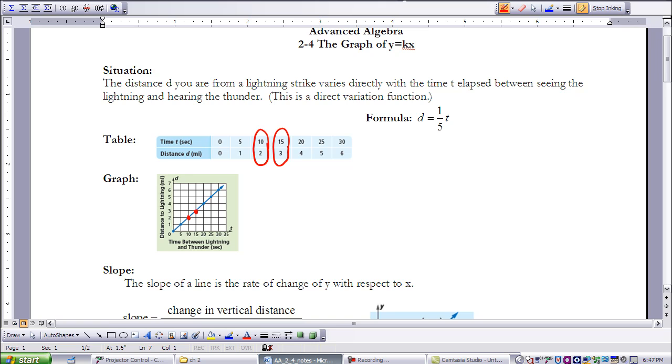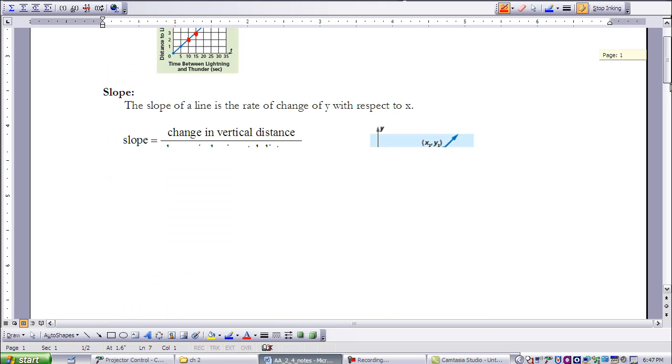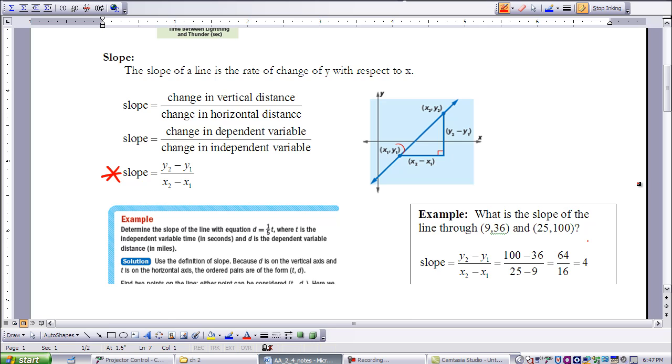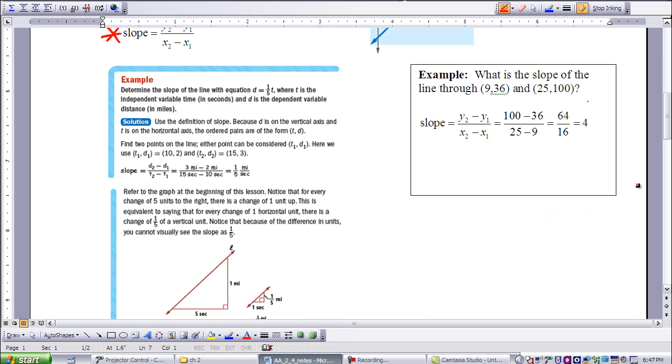Now I'm going to move down to this example in our lesson here. And we want to determine the slope of a line with the equation D equals one-fifth T, where T is the independent variable, time, and D is the dependent variable, distance.